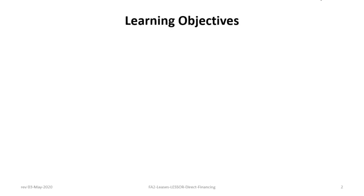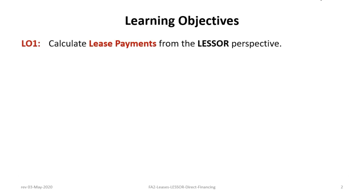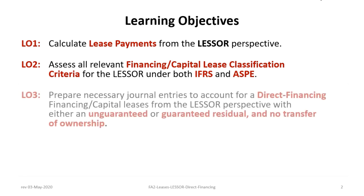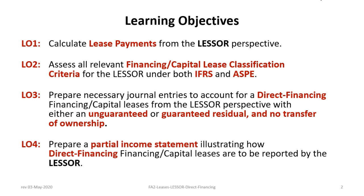This tutorial has four learning objectives. The first is to review how to calculate the lease payments from the Leasor perspective. The second is to assess the relevant lease classification criteria for financing or capital leases from the Leasor perspective under both IFRS and ASPE. The third is to prepare the necessary journal entries to account for a direct financing lease from the Leasor perspective in situations of guaranteed or unguaranteed residuals and no transfer of ownership. Finally, to illustrate how to prepare a partial income statement showing how a direct financing capital lease would be reported by the Leasor.